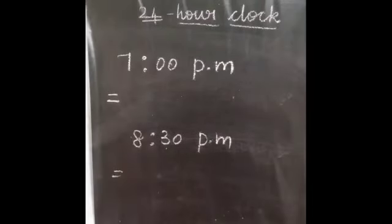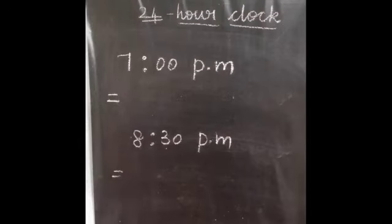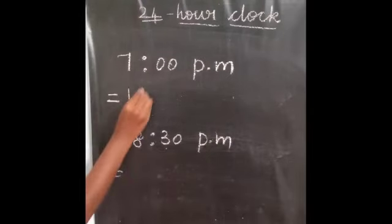Now convert this into 24 hour clock time. If the time is 7 PM, how do you write it in 24 hour clock? PM is here, so you have to add 12 to 7. What is 12 plus 7? Count: 13, 14, 15, 16, 17, 18, 19. So the time is 19:00.